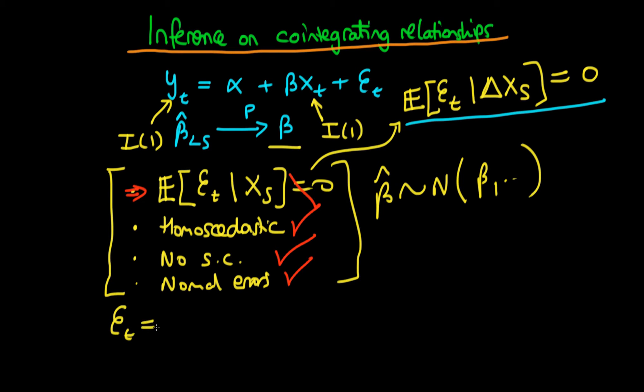we know that et is in general going to be some function of these changes in x because we're assuming that the strict exogeneity assumption doesn't hold. So we assume that et is equal to gamma k times delta x t plus k, plus gamma k minus 1 times delta x t plus k minus 1, and in principle we continue all the way until we get to the fact that we actually have gamma 0 times delta x t.